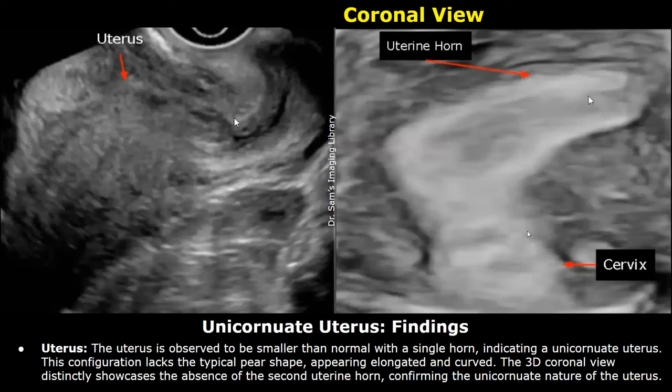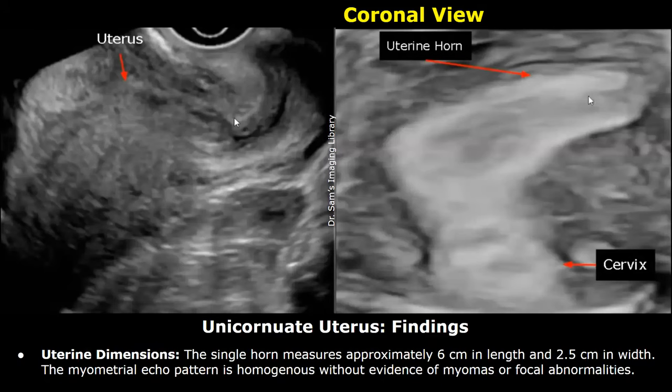The 3D coronal view distinctly showcases the absence of the second uterine horn, confirming the unicornuate nature of the uterus. Uterine dimensions: the single horn measures approximately six centimeters in length and 2.5 centimeters in width. The myometrial echo pattern is homogeneous without evidence of myomas or focal abnormalities.